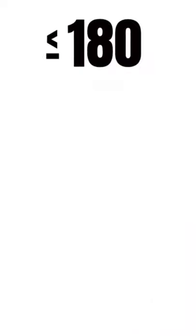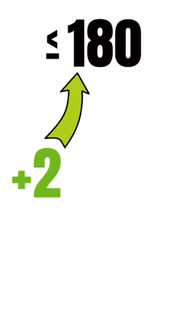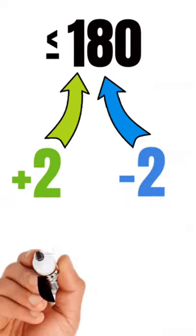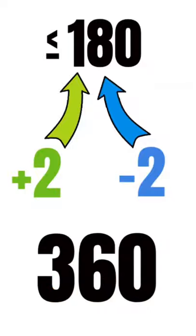Headings of 180 or less: add 2 to the first number and subtract 2 from the second number. In this example, our reciprocal is 360.